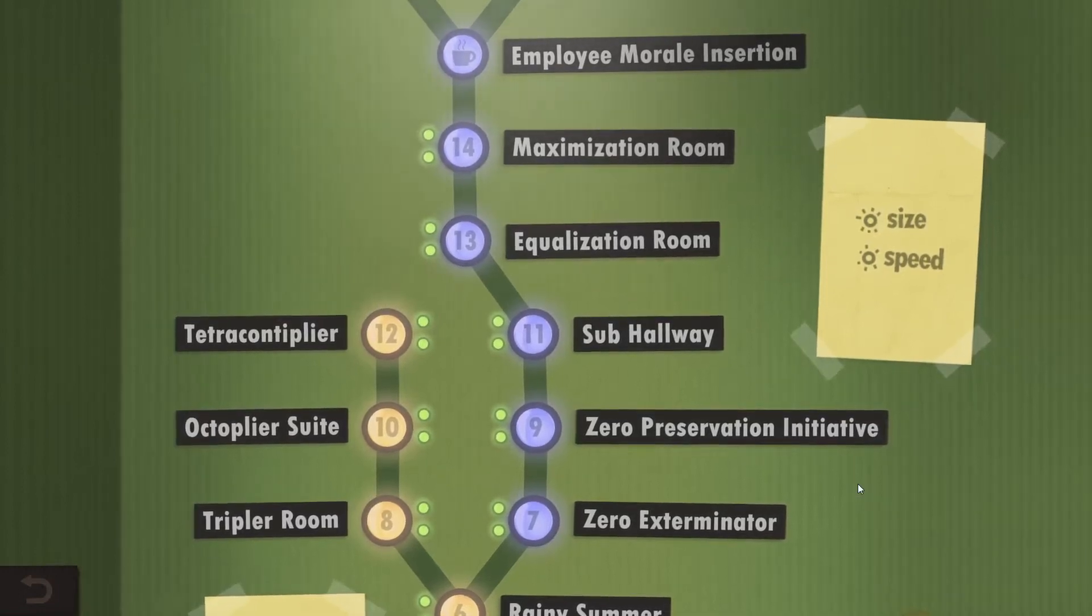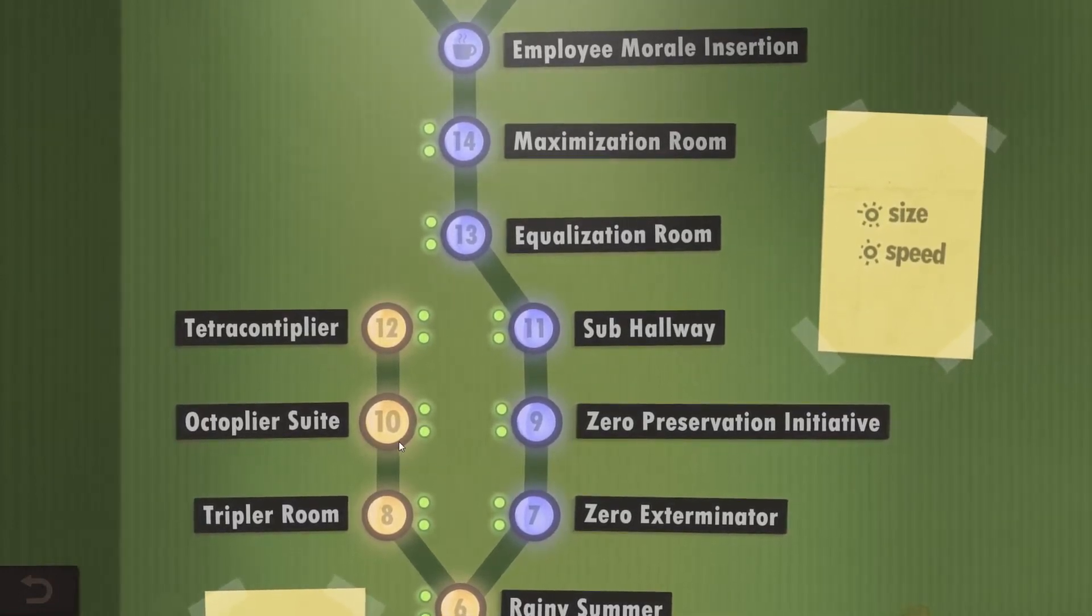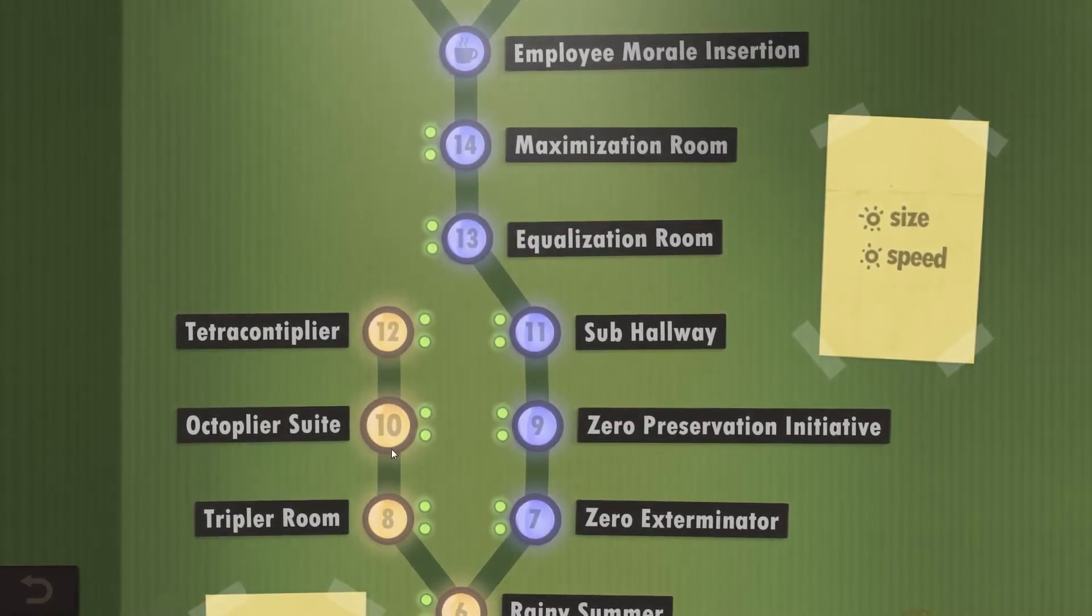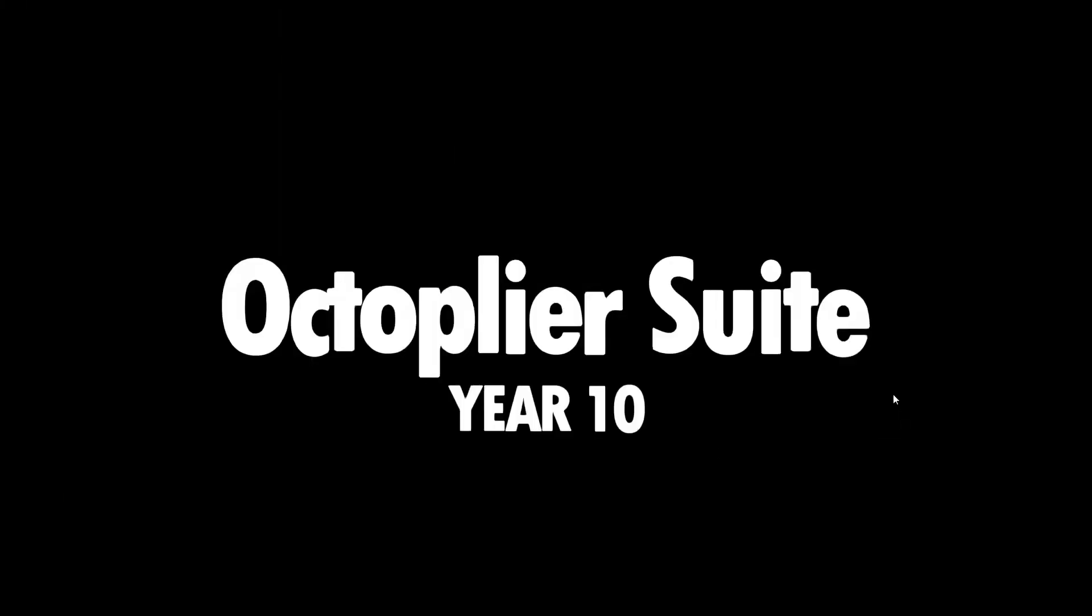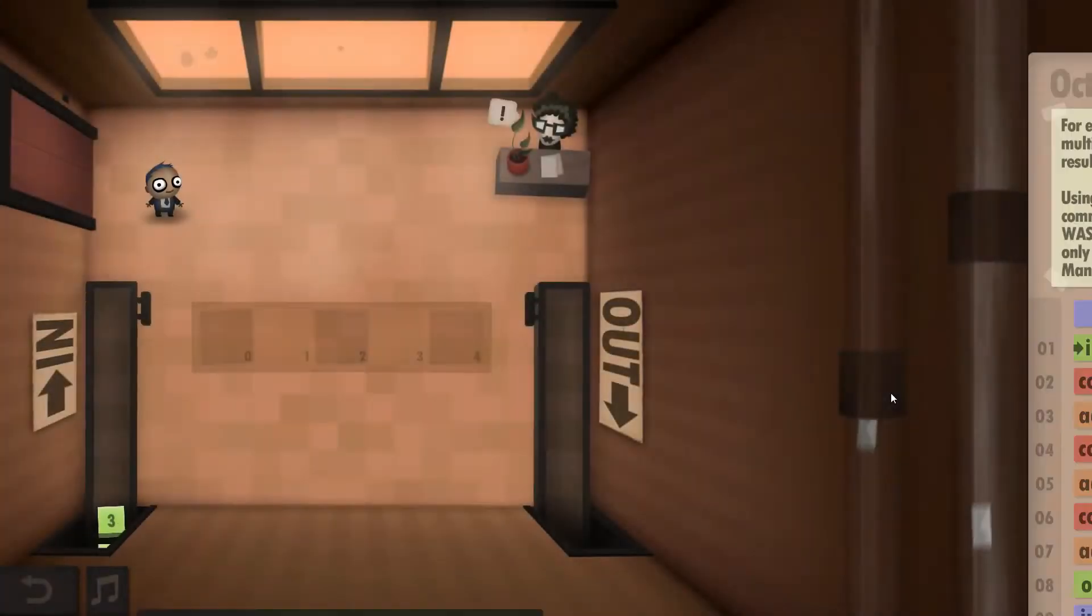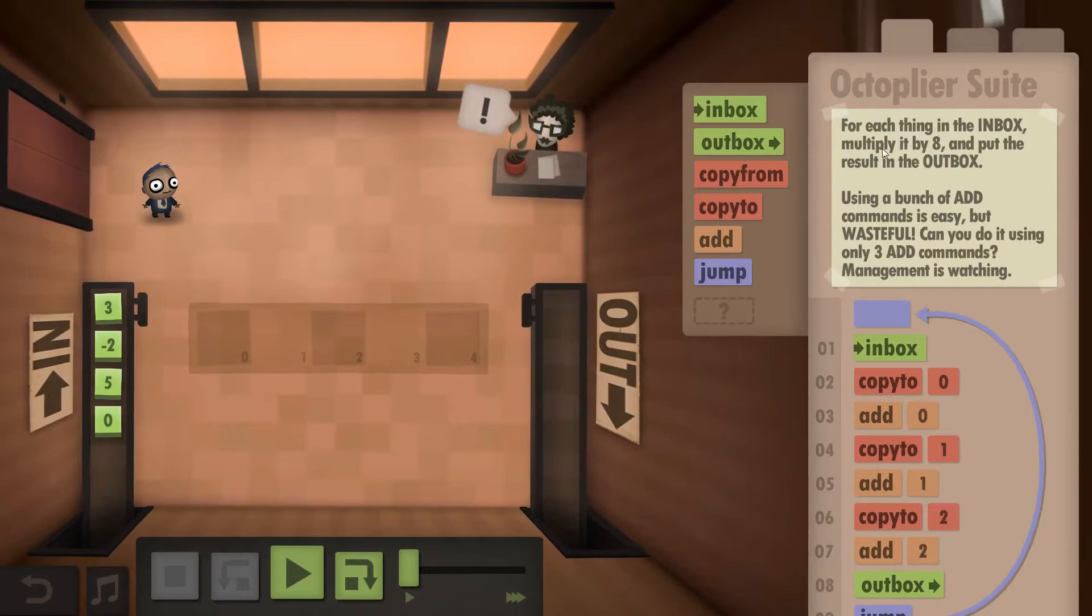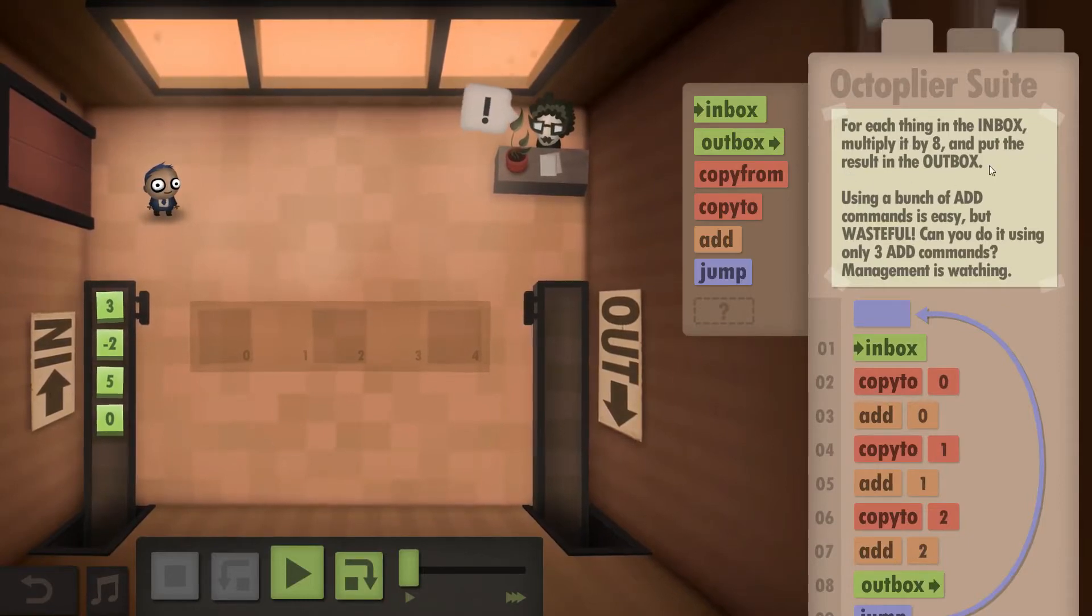Hello and welcome back everyone to Human Resource Machine. We're going to take a look at the Octoplier Suite. For each thing in the inbox, multiply it by 8 and put the result in the outbox.